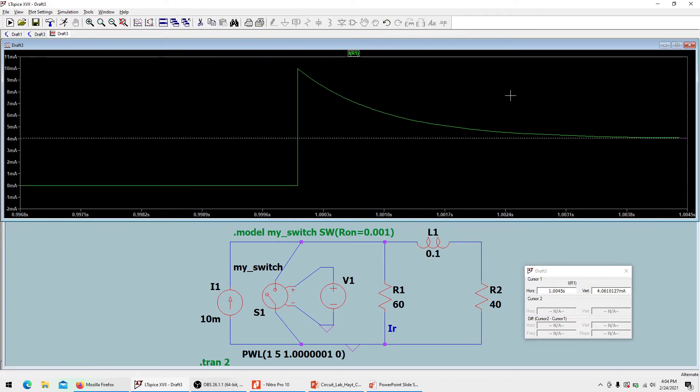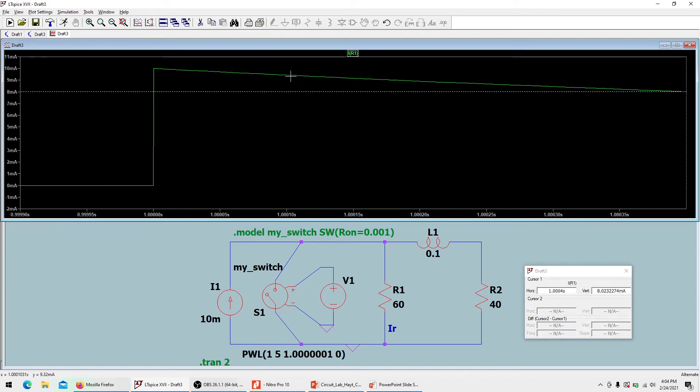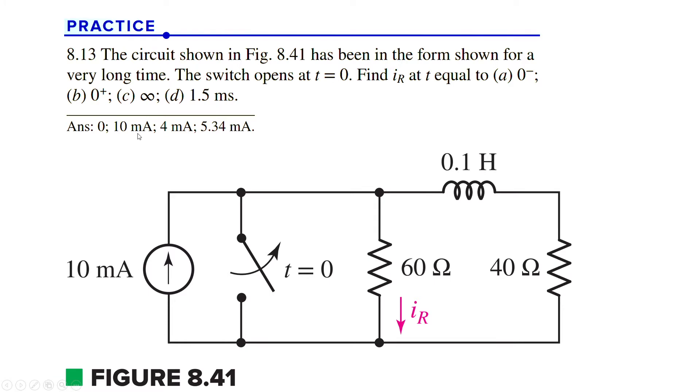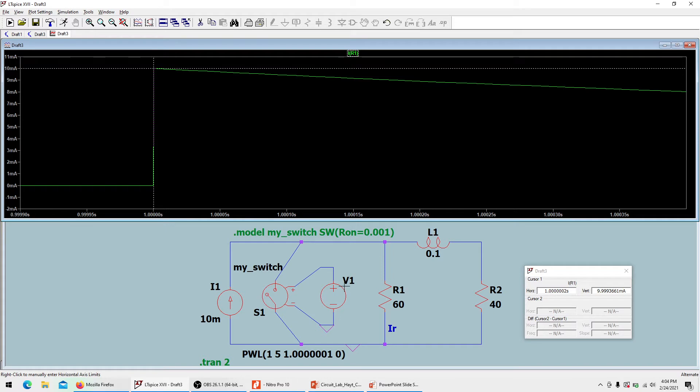The next thing which is very important is zero minus and zero plus seconds. Here's the cursor. At zero minus second, which is 999.9 milliseconds, the current is 166.65 nanoamperes, which is like zero. At the very next moment when it is 1.0002 seconds, the current has become 9.999 milliamps, which is 10 milliamps at zero plus seconds.